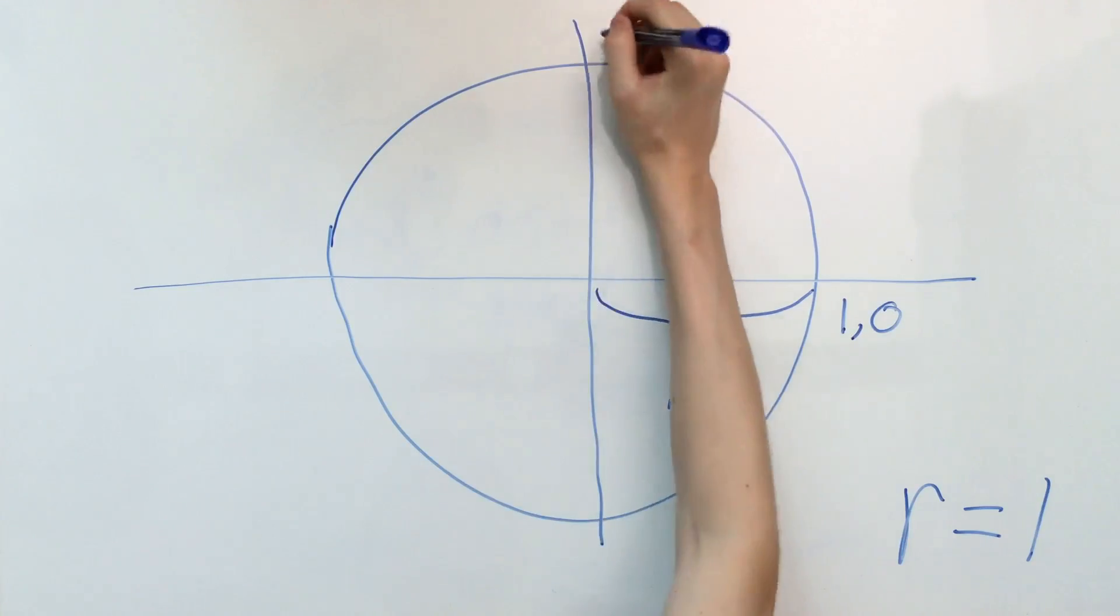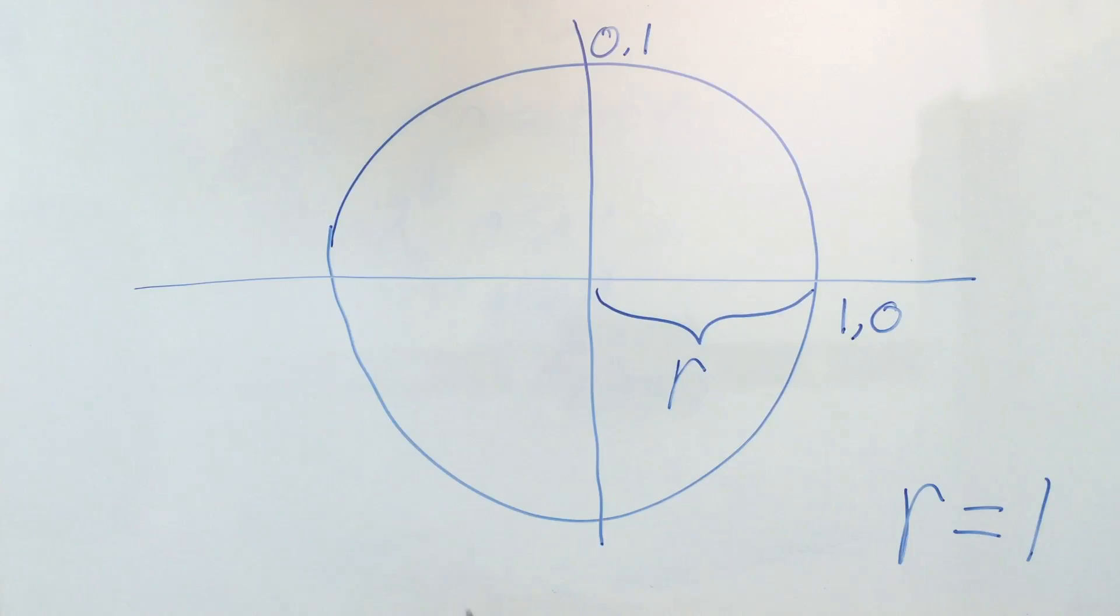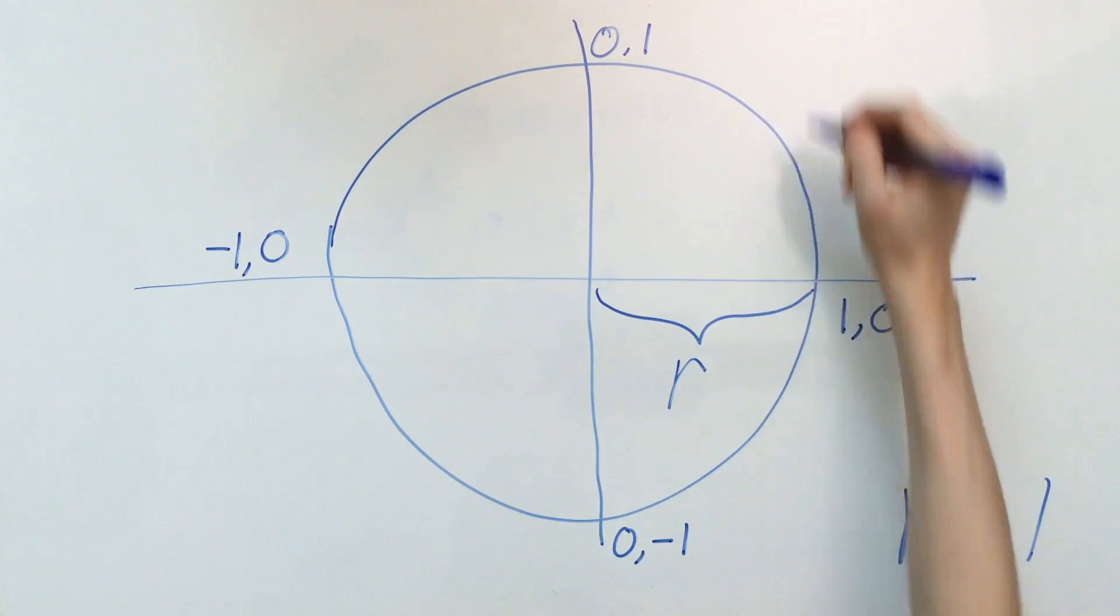Up here, this would be 0 for the x and 1 for the y. Back here, it would be negative 1 for the x and 0 for the y. And down here, it would be 0 for the x because it's not off of this y-axis, and then negative 1 for the y.